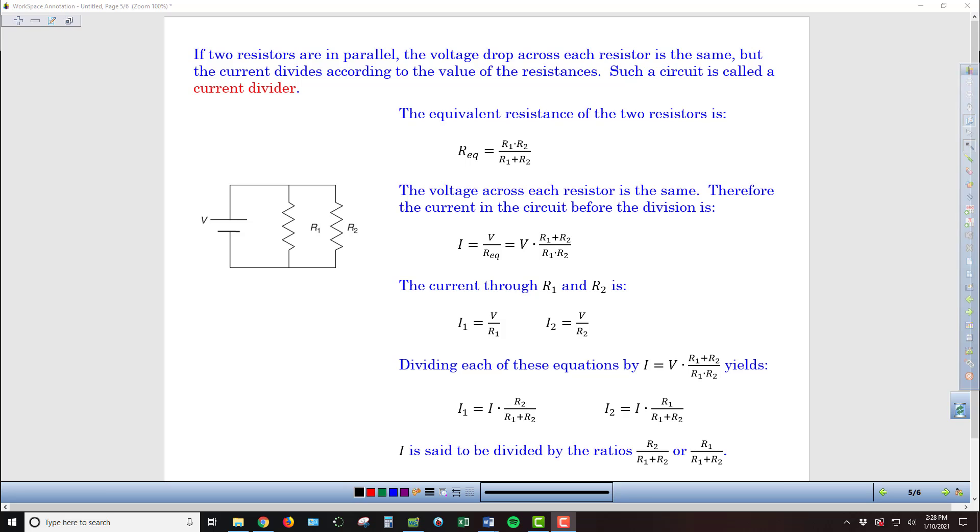If we have two resistors that are in parallel, they effectively function as a current divider. Whatever current is flowing out from the battery in our diagram here, the current is going to be divided into I1 flowing through the first resistor, and I2 flowing through the second resistor. So if we want some desired current to power some device, we can structure a circuit so that it will supply that through this format.